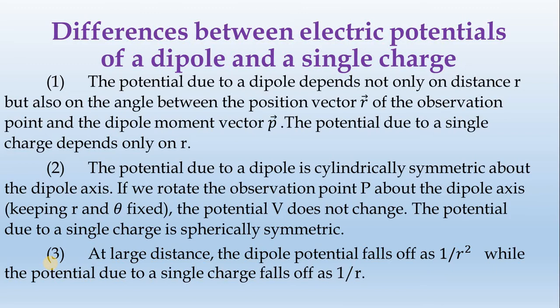If there is a single charge, there is a distance separation. Here is the single charge potential. The dipole consists of two charges that are opposite, whereas this is the single charge.